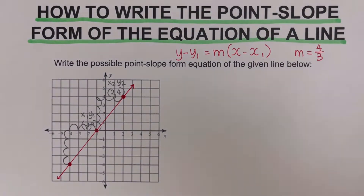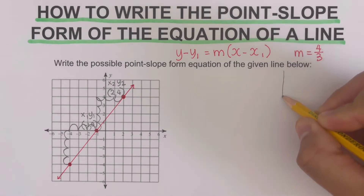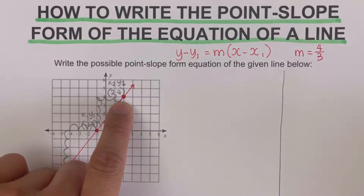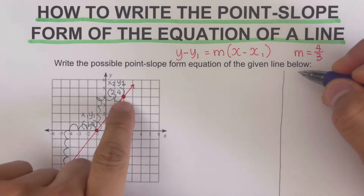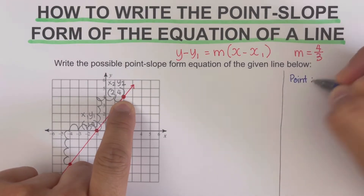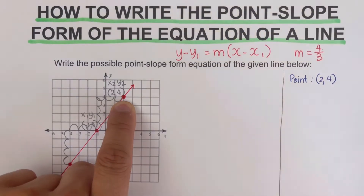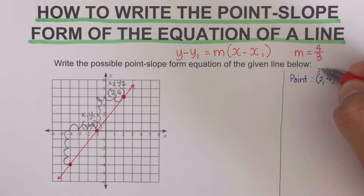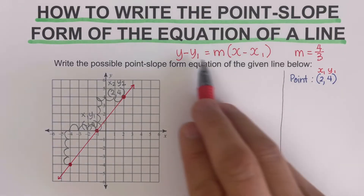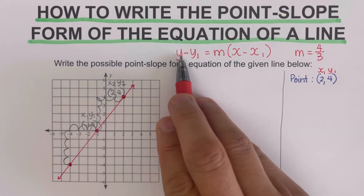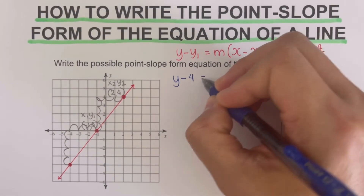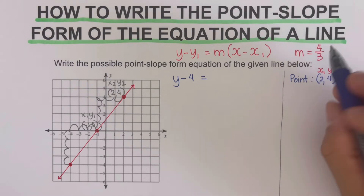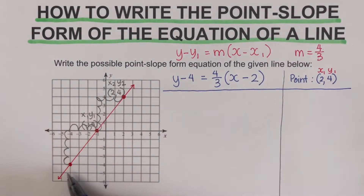Now we determine the possible equation of this line using point-slope form. Let's take the first point: 2, 4. We use this as our x₁ and y₁ and plug it in. The equation comes out: y minus 4 equals 4 thirds times the quantity x minus 2. This is one possible equation for this line.